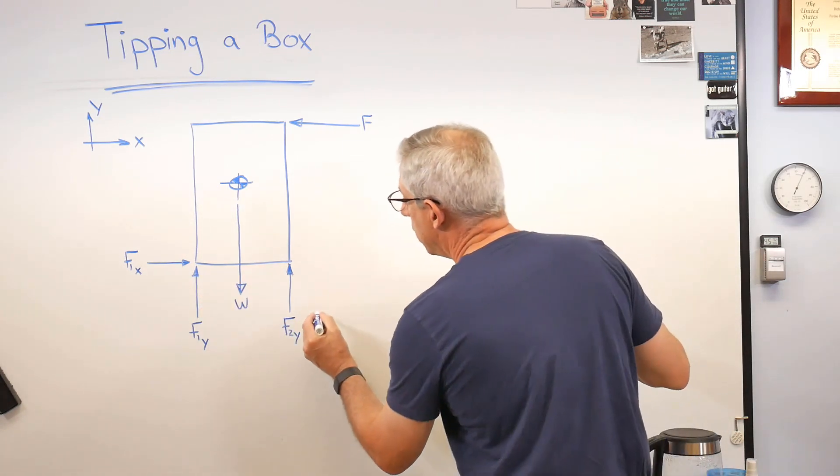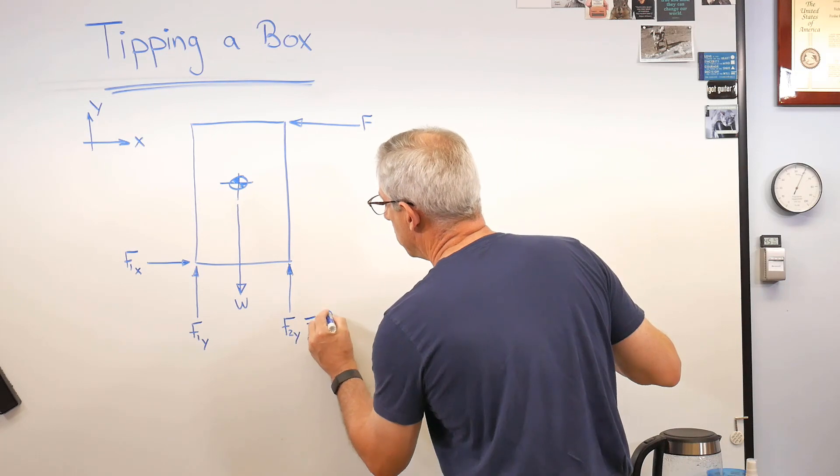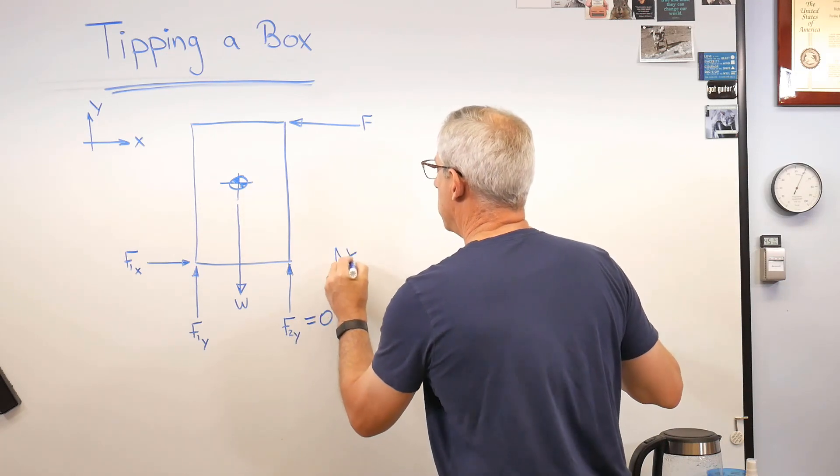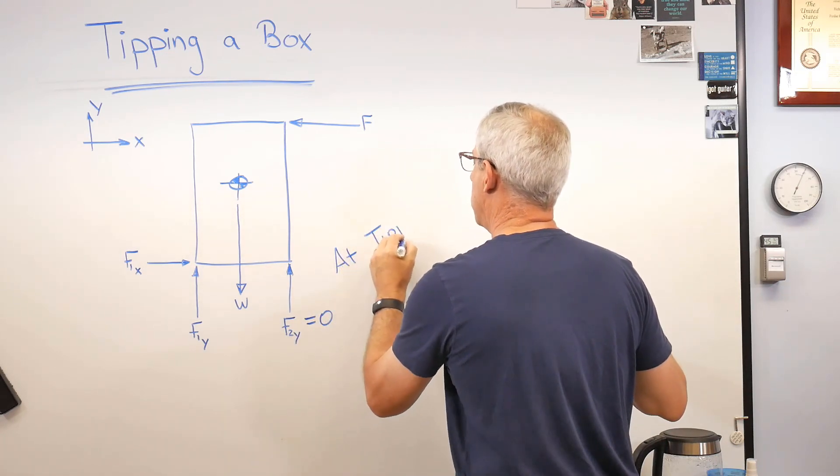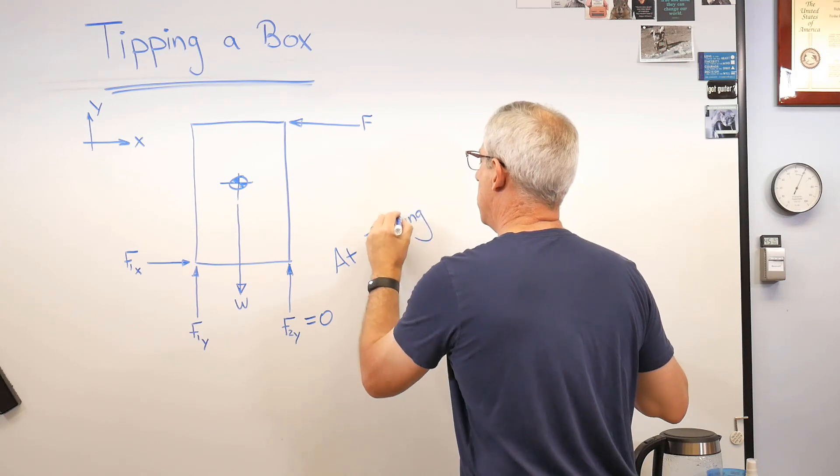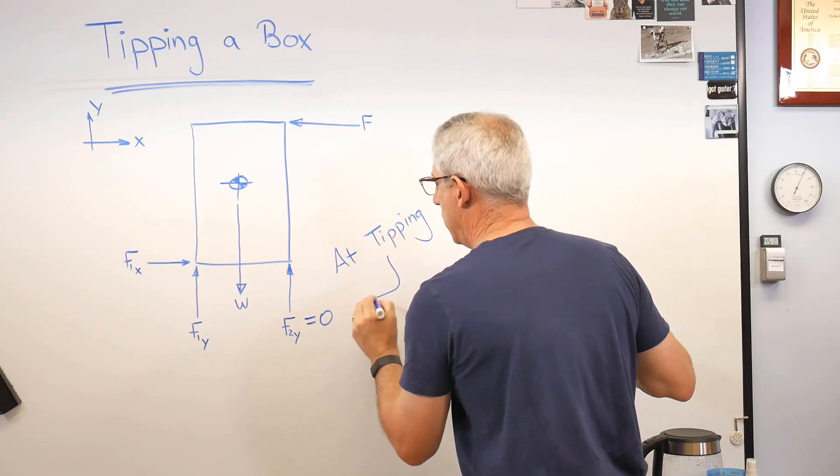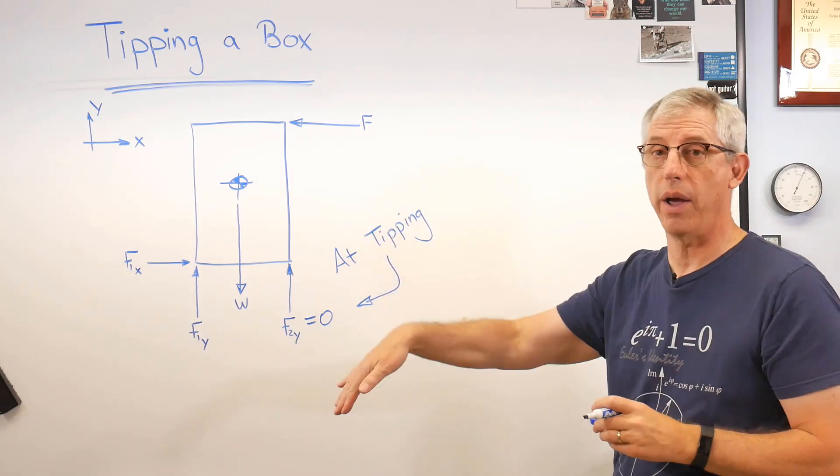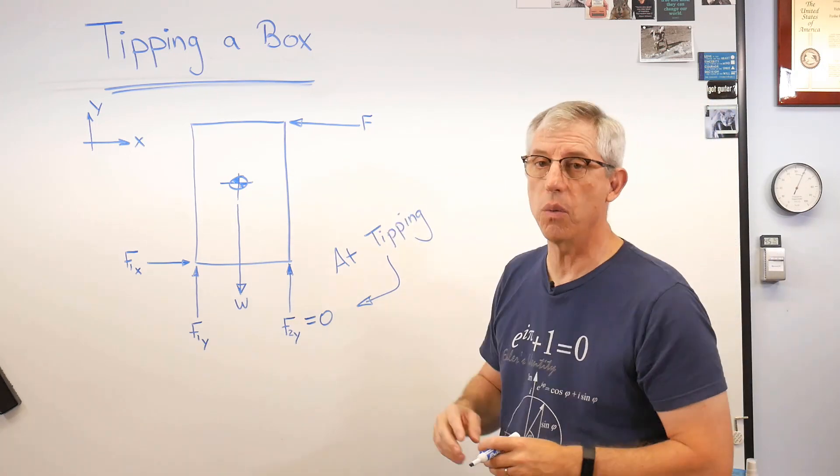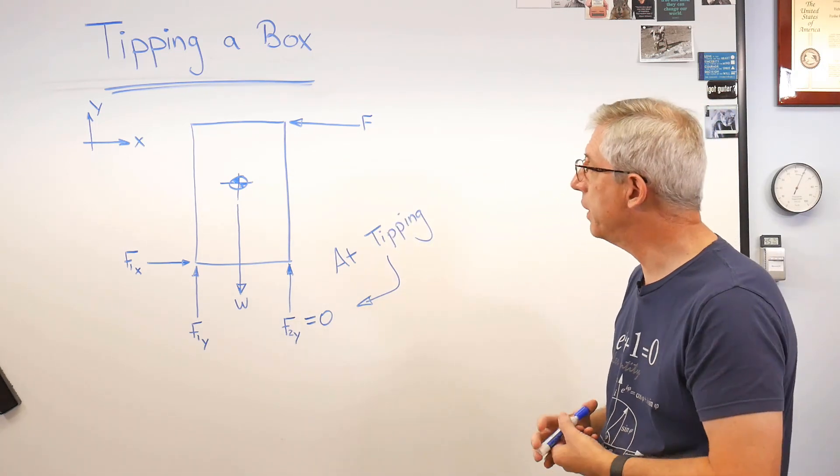So that's why I put the force there. When it's about to tip, that force goes to zero. And I'll call this at tipping. Now that doesn't mean the box is tipping all the way over. It just means now it's on one edge, right? That's what's going on there.